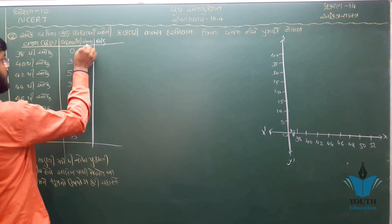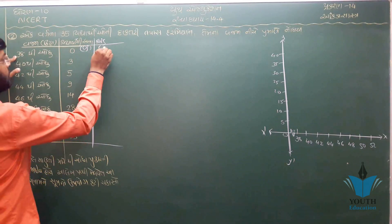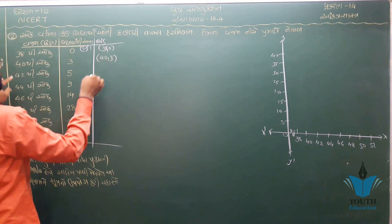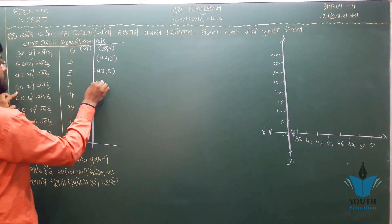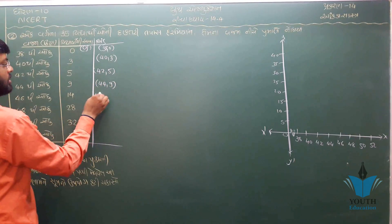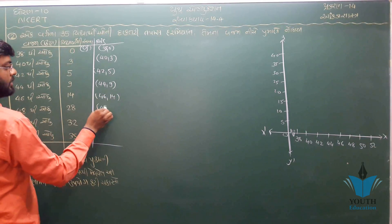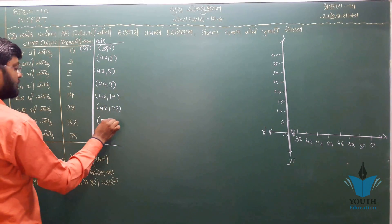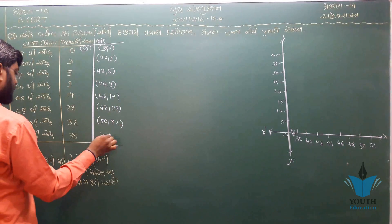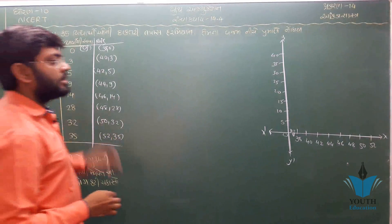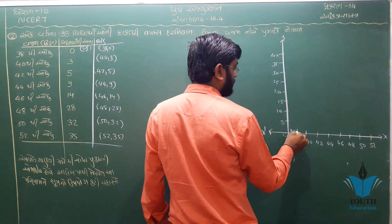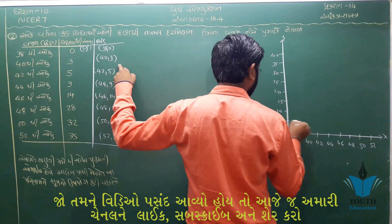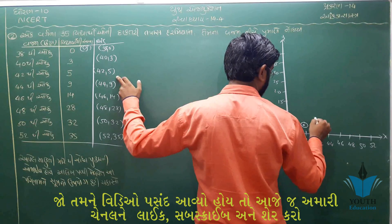આ કોષ્ટકમાં આપણને આ પ્રમાણે સંચિત આવૃત્તિ (cumulative frequency) આપેલી છે: 38 → 0, 40 → 3, 42 → 5, 44 → 8, 45 → 10, 46 → 15, 48 → 20, 55 → 32, 52 → 35, 32 → 44, 44 → 45, 45 → 45.